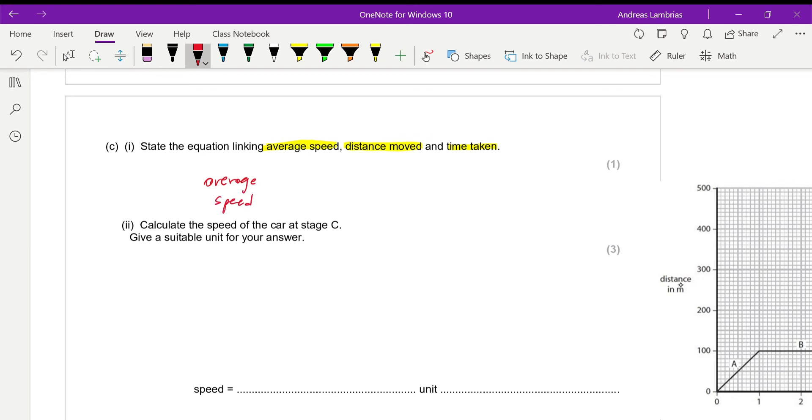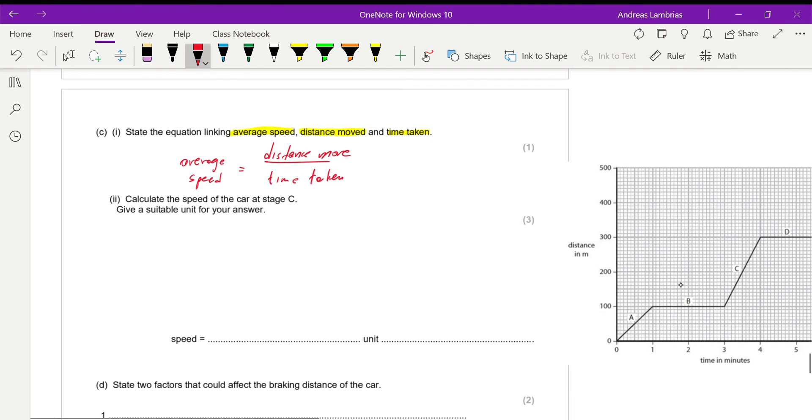Avoid using any triangles. A lot of students are using triangles - speed, distance, time - this is not a formula. Now we need to calculate the speed of the car at stage C.